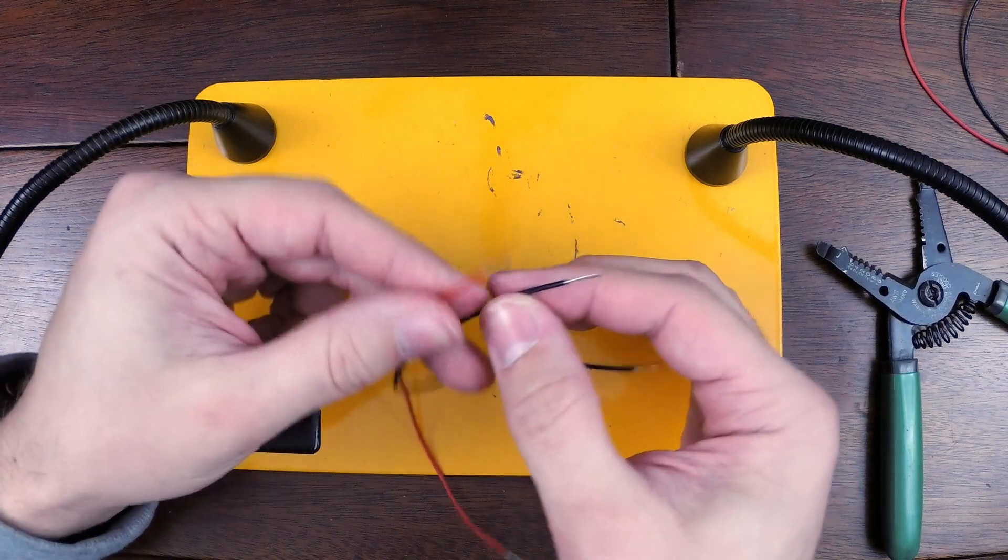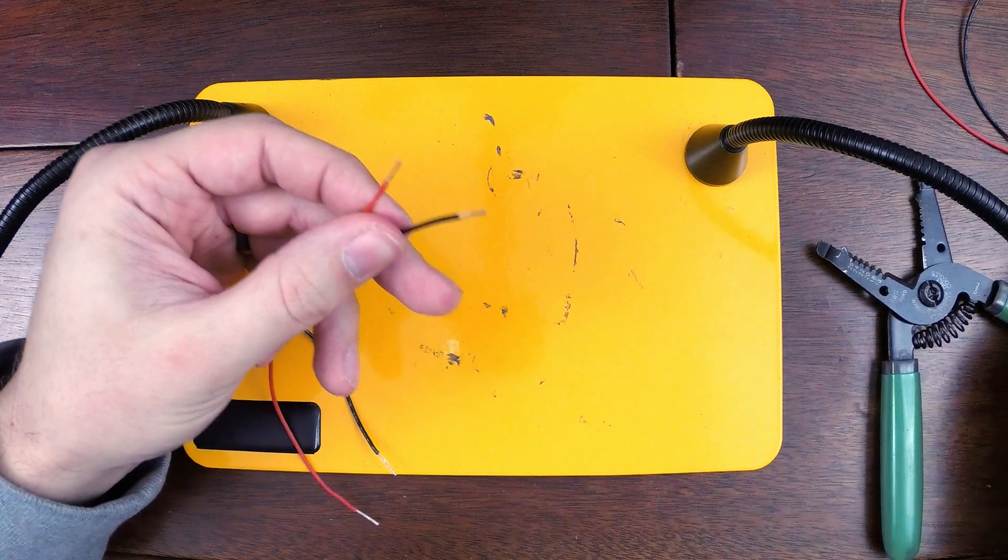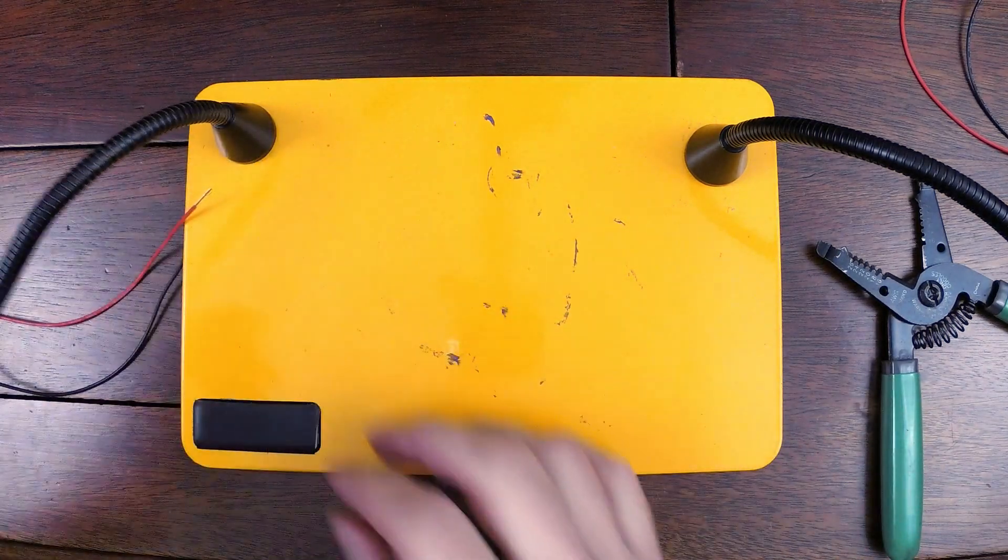And now you could, I guess if you wanted to, you could just stick this right in here and start soldering. I solder them first, so it's called tinning, wire tinning.